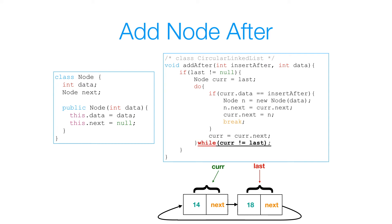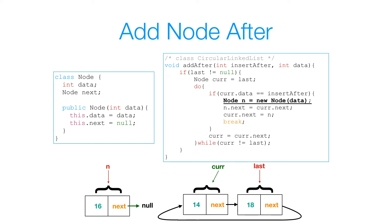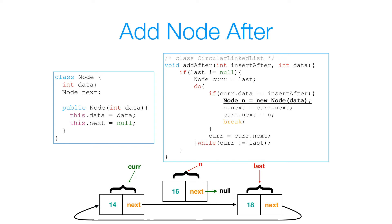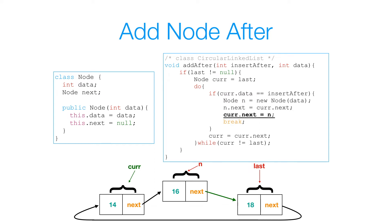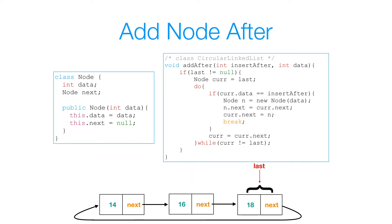Then I check if cur is not equal to last — it's not, so I re-enter the loop. Now cur's data is 14, which matches the data I want to insert after. So I create the new node with data 16. I set n.next to cur.next so it references the same object as last. Then I set cur.next to n. I've now inserted data 16 between 14 and 18, so I break out of the loop. That's how we add a node after a given node.